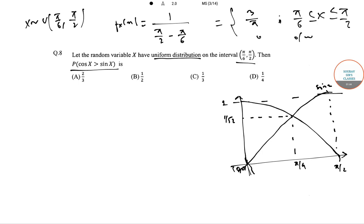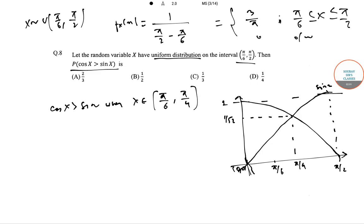Now we can see that cos x is greater than sin x when x belongs to π/6 to π/4 — that is, in this particular region.